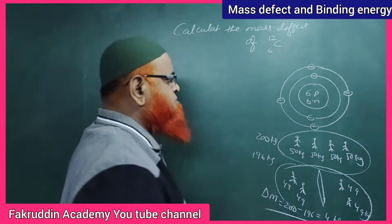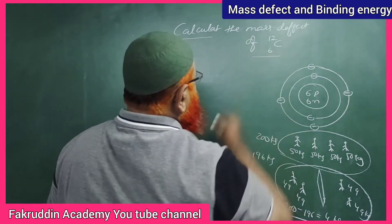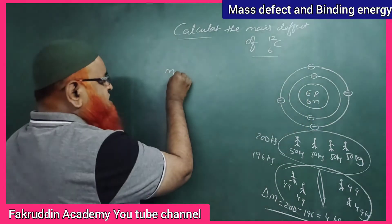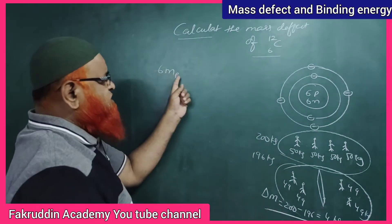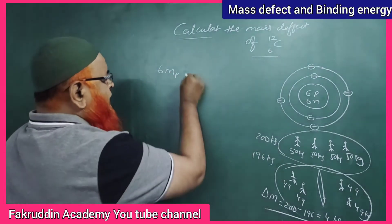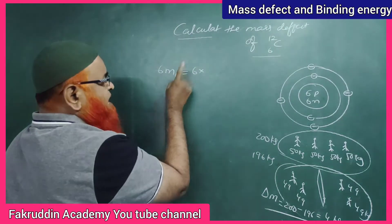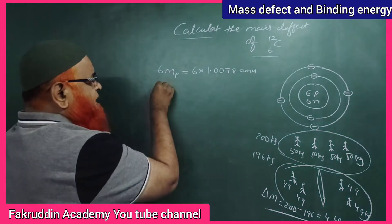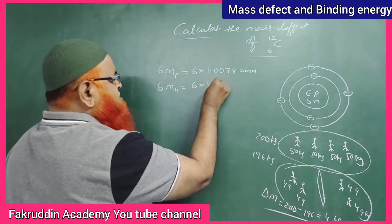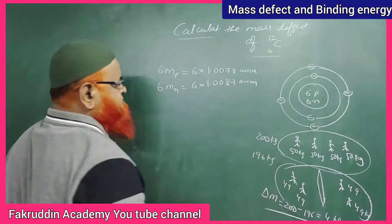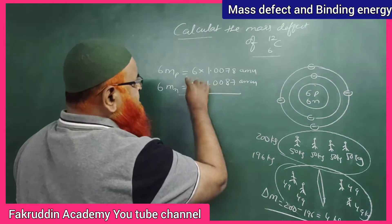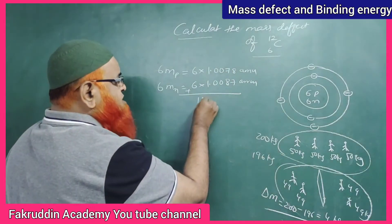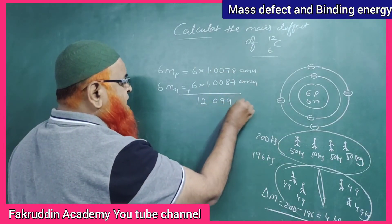The same thing happens when we calculate the mass defect of carbon C-6-12. If you measure the mass of 6 protons, it is 6 × 1.0078 atomic mass units. The mass of 6 neutrons is 6 × 1.0087 atomic mass units. If you add them together, you get 12.099 atomic mass units.